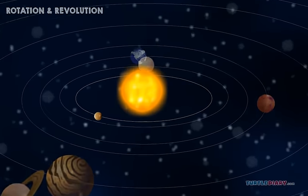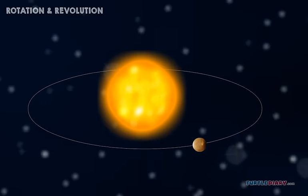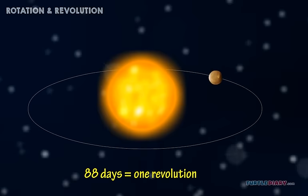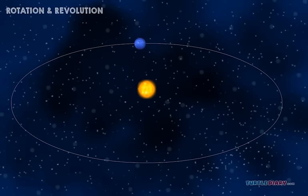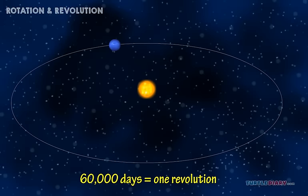Mercury has a very short year. It takes only 88 days to go around the Sun once. But a year on Neptune takes around 60,000 days.